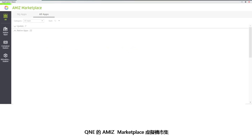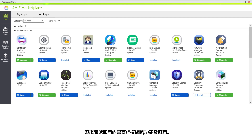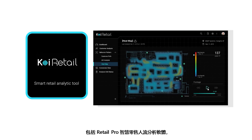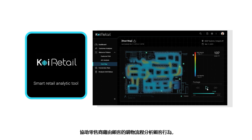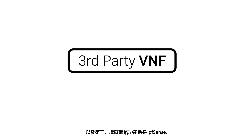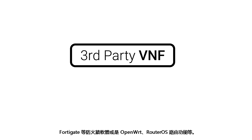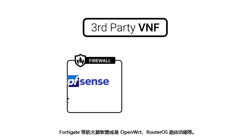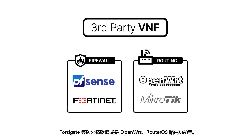QNE features the Amiz Marketplace, which enables you to freely deploy a wide array of virtual network functions and applications. This includes the RetailPro store traffic analytics software, which can help retailers analyze visitor behavior based on their shopping journey. Other third-party virtual network functions include PFSense, FortiGate for firewall functions, or OpenWRT and RouterOS for routing functions.